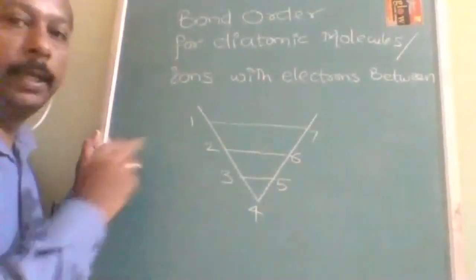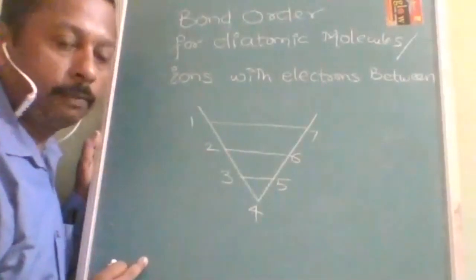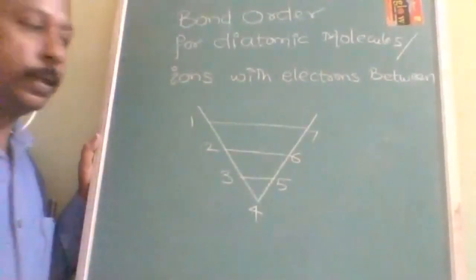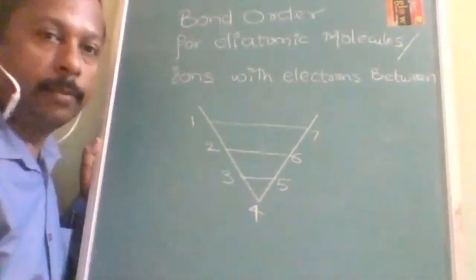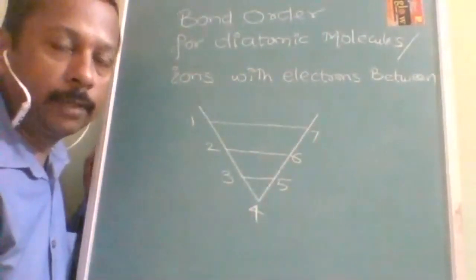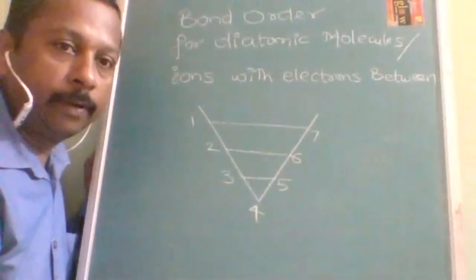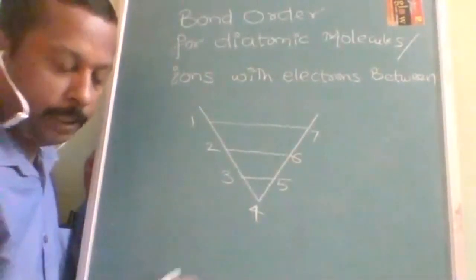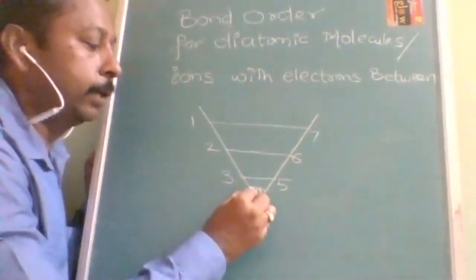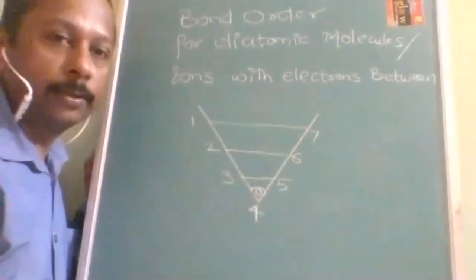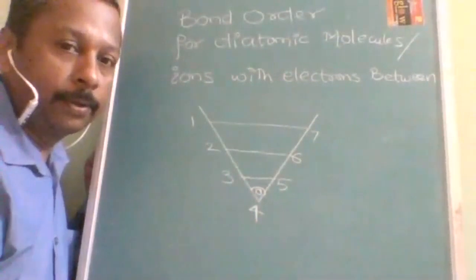OK, so from 8 onwards already we have studied, 8 onwards already we have studied. OK, so like there it was the maximum for the bond order, maximum bond order was found for the 14, but here maximum, minimum bond order will be found for the 4, that is 0. If number of electrons are 4, then bond order is going to be 0.